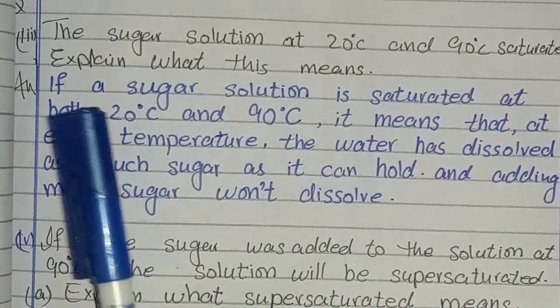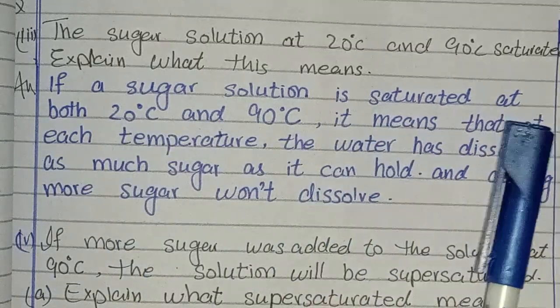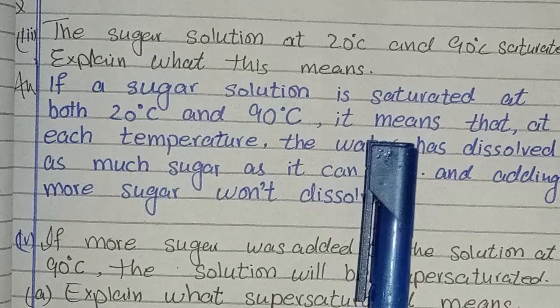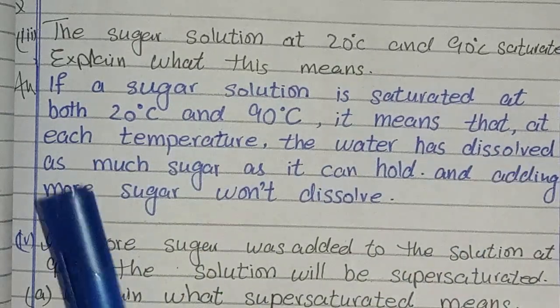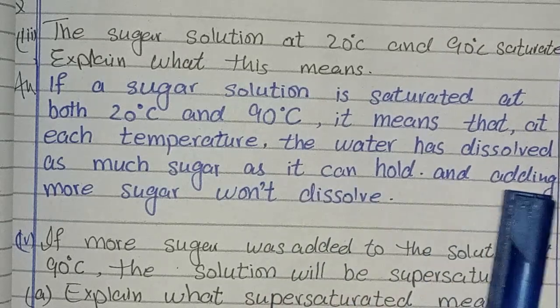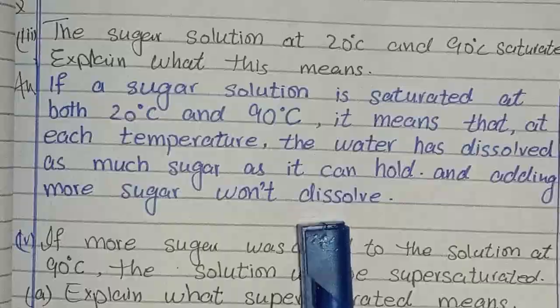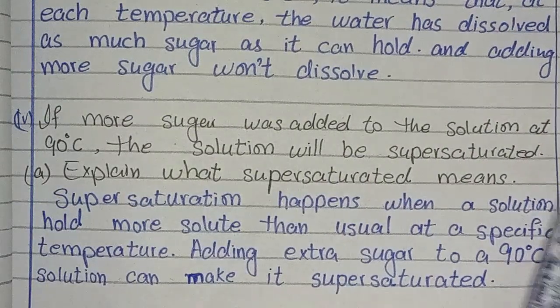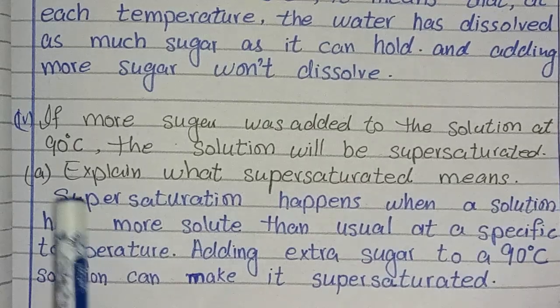Question 4 part C: The sugar solution at 20 degrees and 90 degrees is saturated solution, explain what this means. If a sugar solution is saturated at both 20 degrees and 90 degrees, it means that at each temperature water has dissolved as much sugar as it can hold, and adding more sugar won't dissolve.